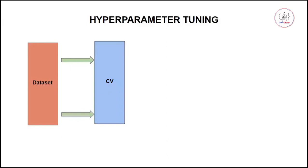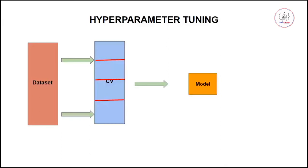In k-fold cross validation, we divide the dataset into different folds randomly, and each fold serves as both a training set and a testing set. Here we have divided the dataset into three folds, for example. Then we build our model, which could be any model — supervised or unsupervised.